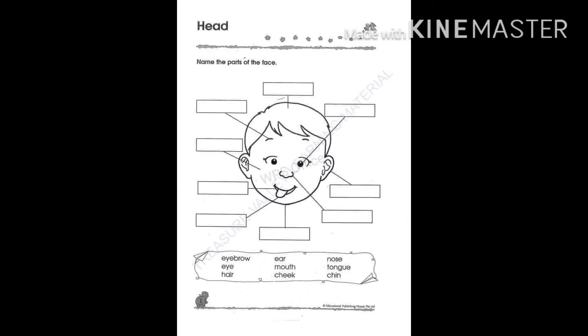Look at the picture first and then name the parts of the face. Which is eyebrow? So you write down the word eyebrow. Write on the word eyebrow like this. Write down the word in the box.